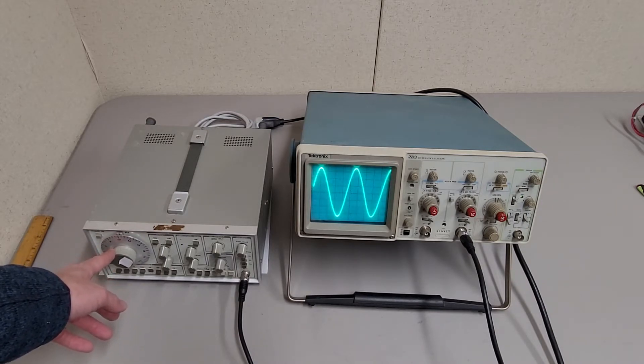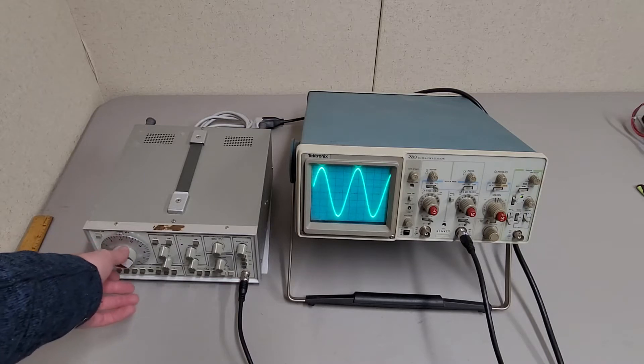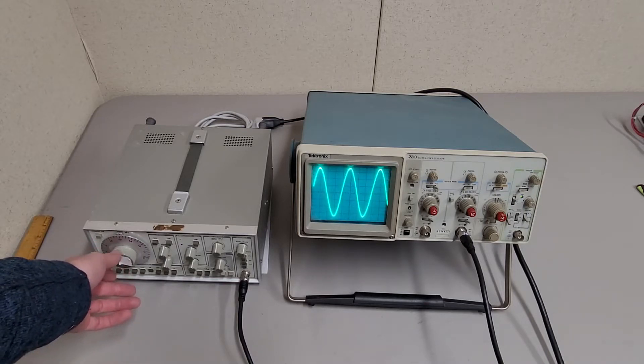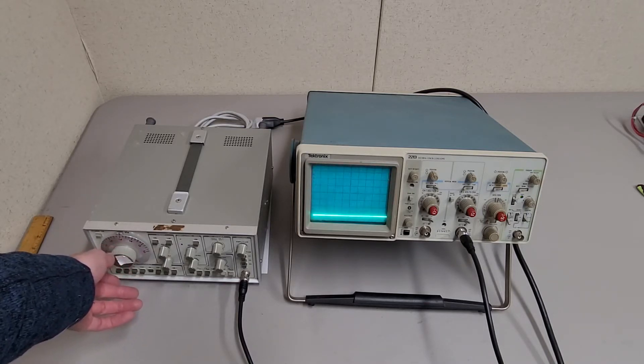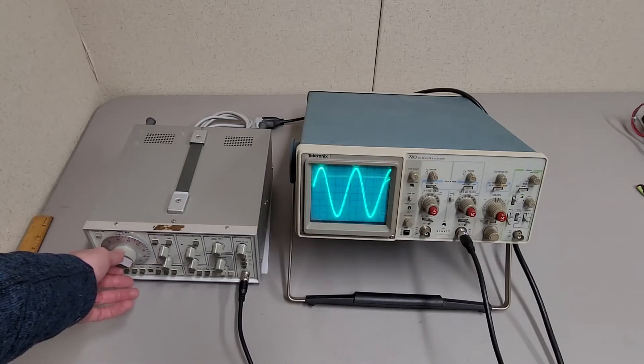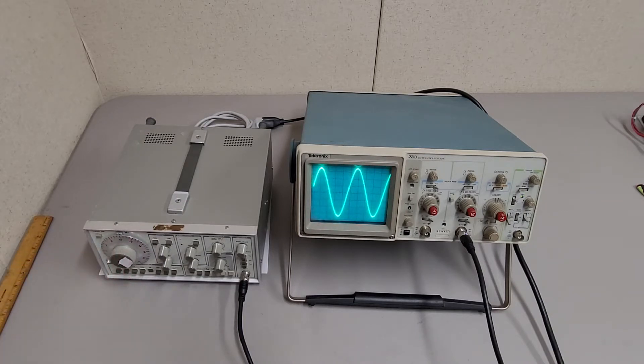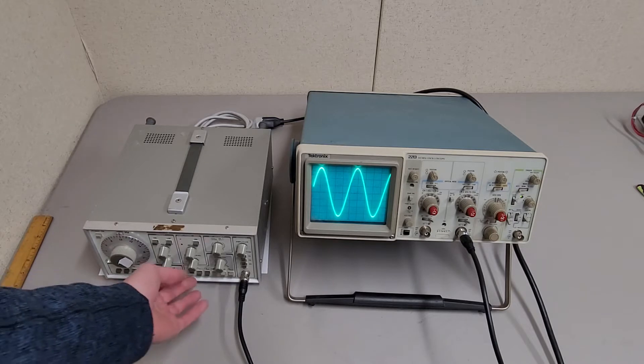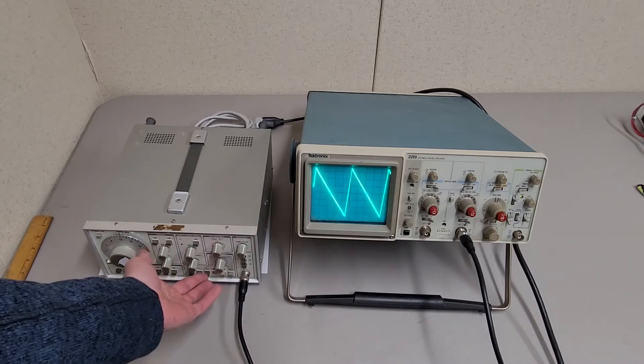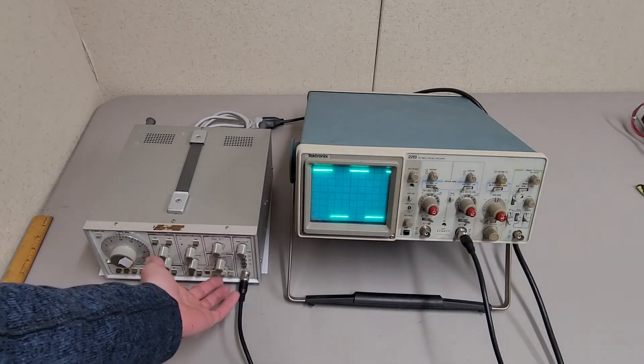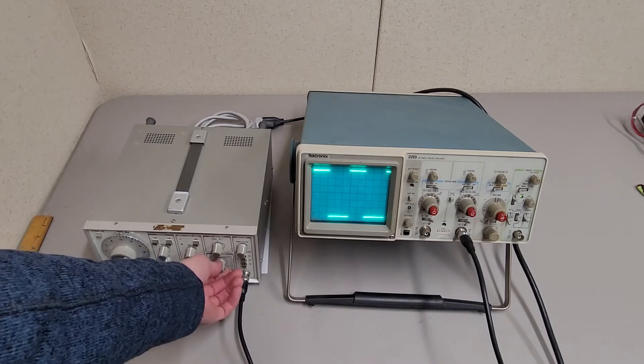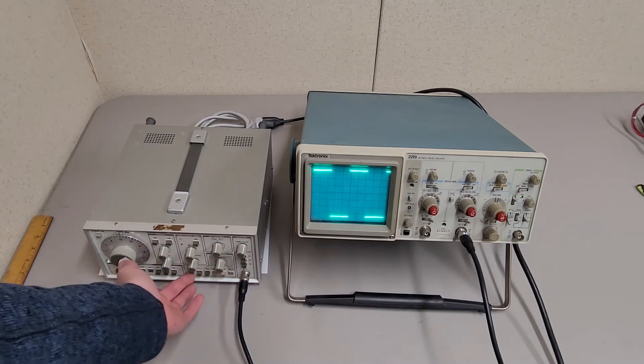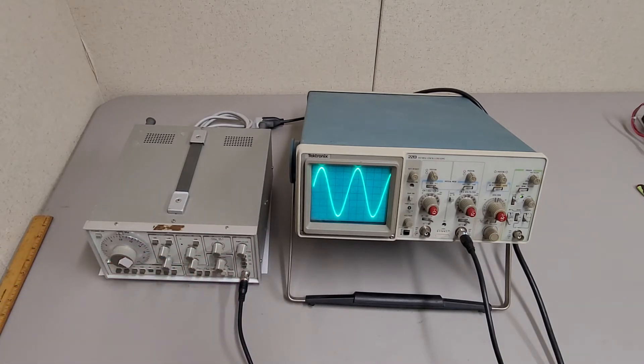There's something wrong with the multiplier knob. Depending on where you turn it, it doesn't work. It seems mostly okay with the 1x multiplier, but it just kind of depends on how temperamental it wants to be.